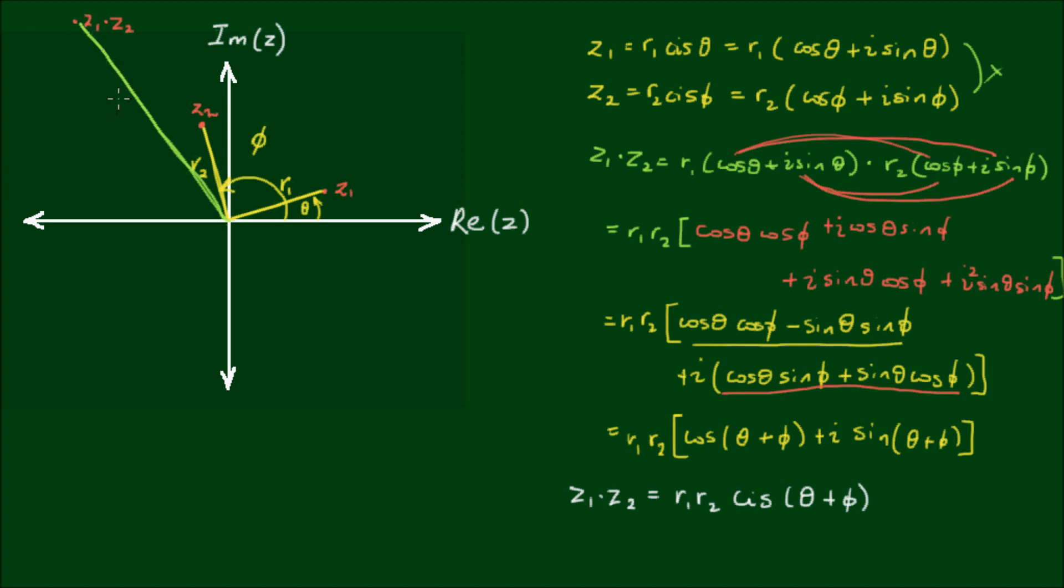Its distance from the origin is r1 times r2, and its angle is θ plus φ.